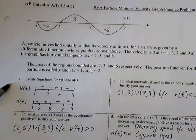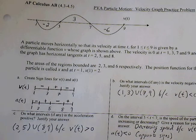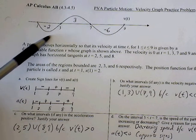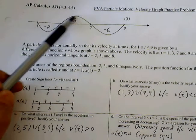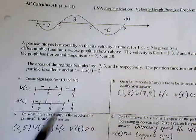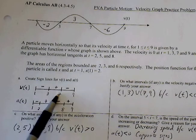For part A, create sign line for v of t. Anything below the x-axis represents where my velocity is negative, positive velocity, negative velocity. So I just fill those in with my critical points at the x-intercepts.